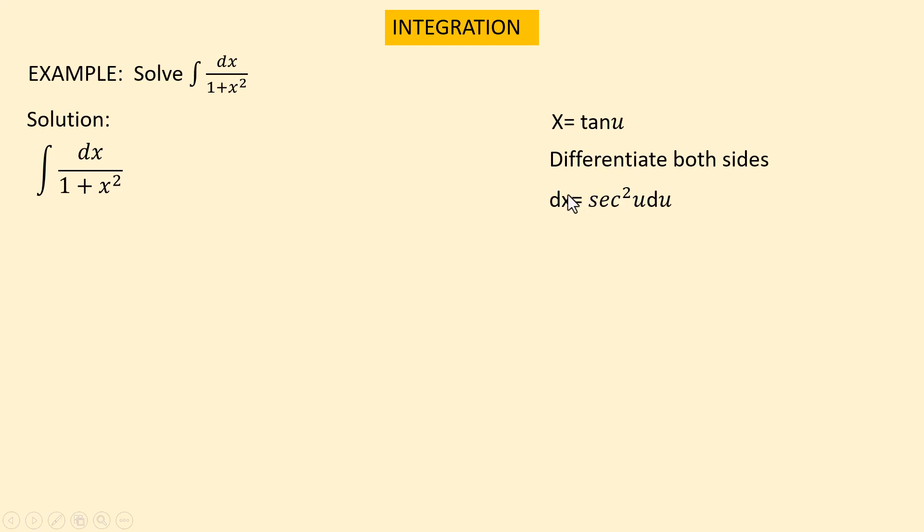Now we have to replace dx with sec squared u du and x by tan u. We get integration of sec squared u du over 1 plus tan squared u. We just replace x by tan u.